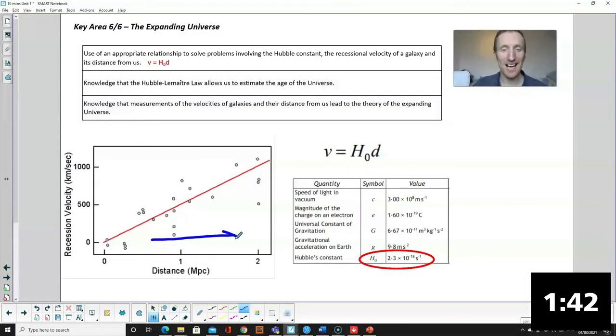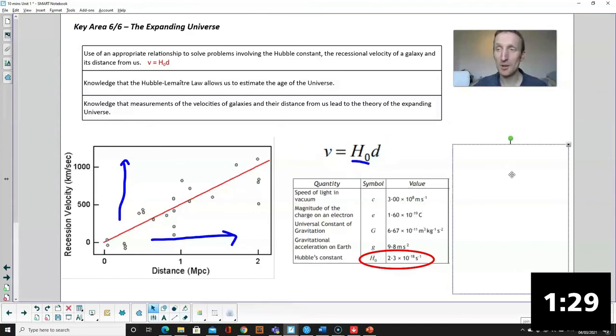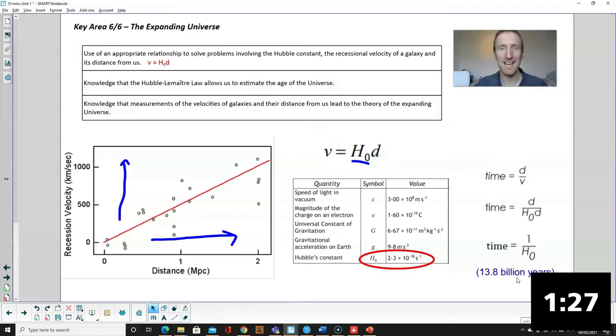Okay, so what we find is that the further a galaxy is away from us, the faster it will be traveling. The gradient of this graph is Hubble's constant, which is on your data sheet, and this is called Hubble's law. It links the recessional velocity with the distance away from the earth. And you can use this equation with some clever maths to estimate the age of the universe as 13.8 billion years.